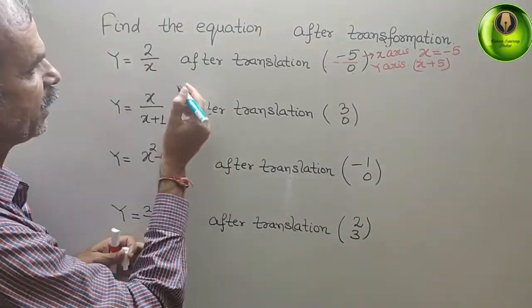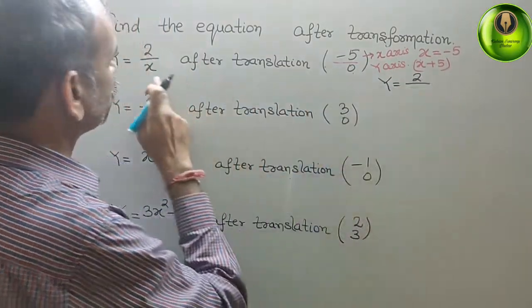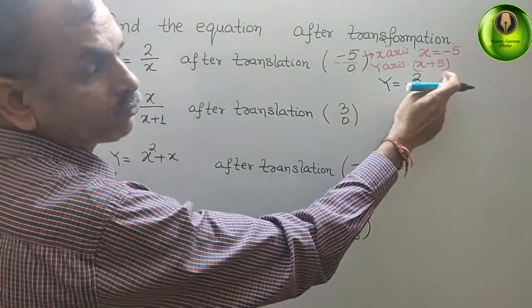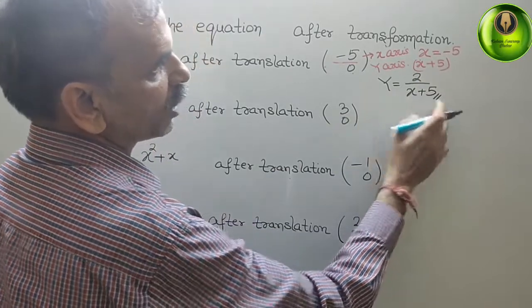Therefore, what we will get here? We will get y equals 2 by, instead of x, we will write x plus 5. So this is your solution now.